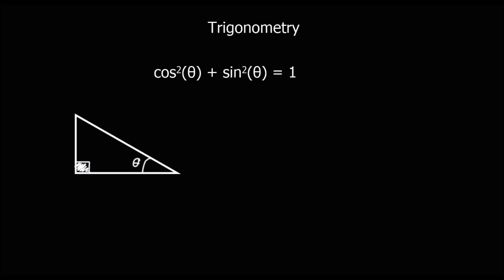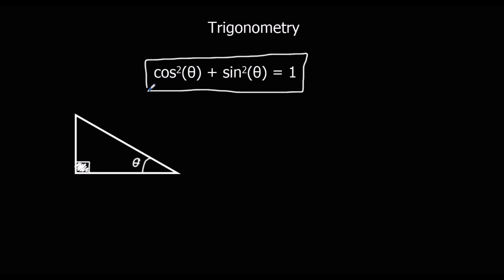In this video we're going to look at trigonometric identities. Here we've got an identity: cos squared theta plus sine squared theta is equal to one. It's an important trigonometric identity that we need to know and remember.